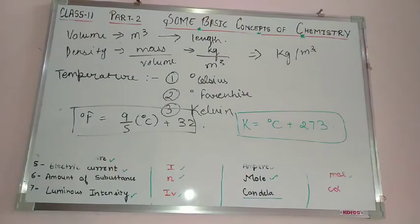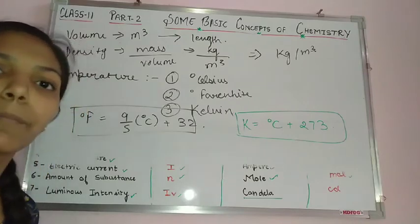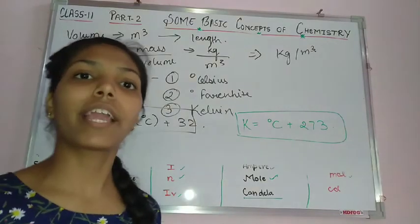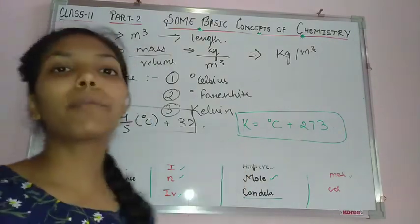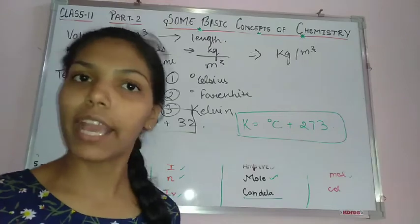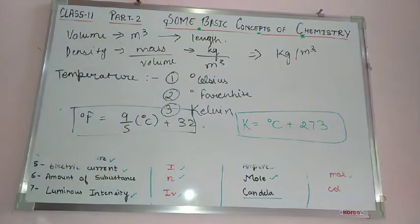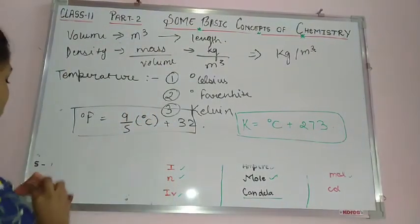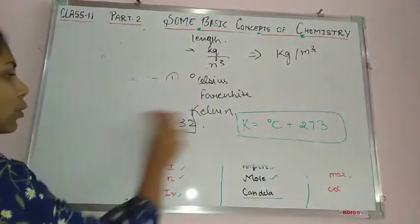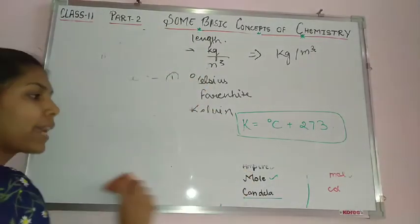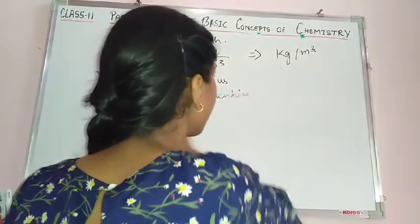One important thing: in degree Celsius and degree Fahrenheit, temperature can be negative. But in Kelvin, temperature is never negative. This was our topic on physical quantities — we have studied both base physical quantities and derived physical quantities.